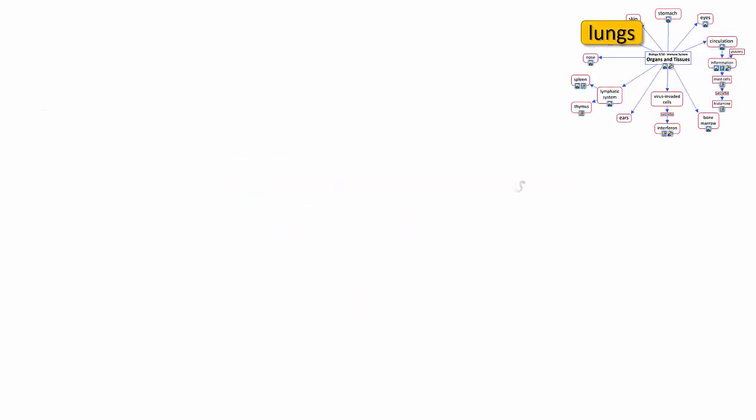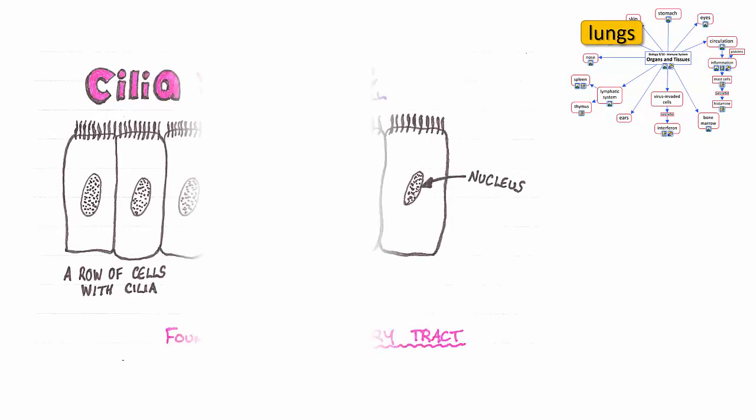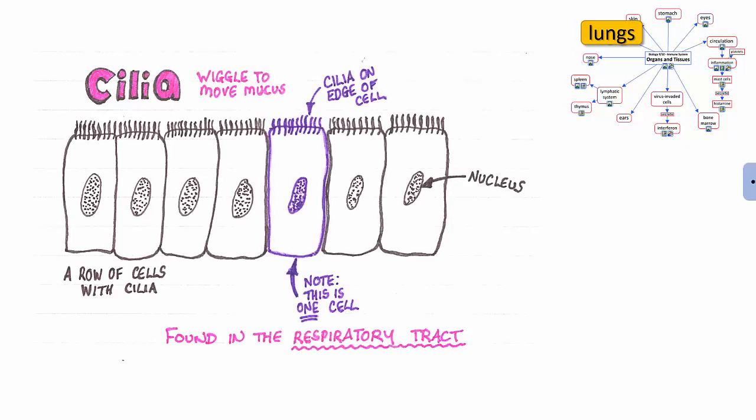Let's take a look at the role of the lungs in the immune system. First of all, the respiratory tract is lined with a sticky mucus membrane.